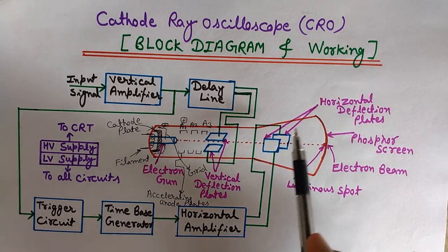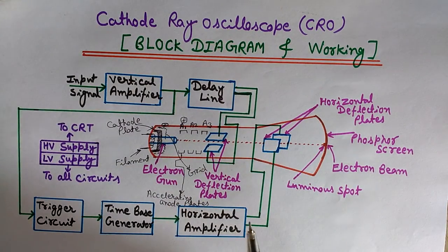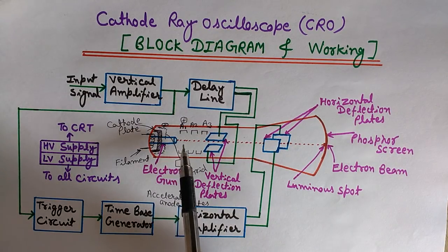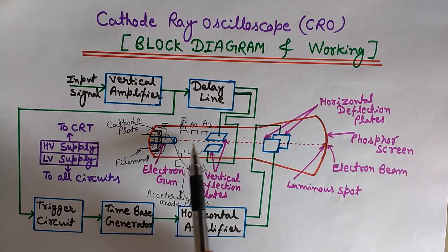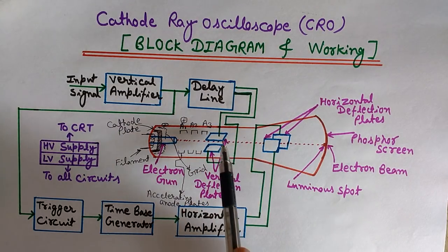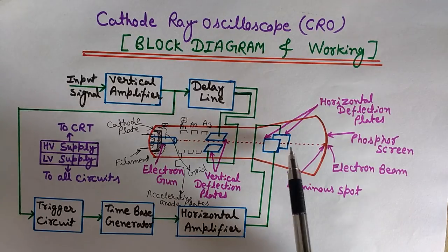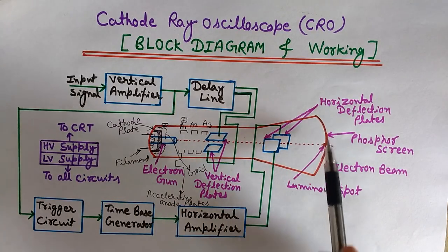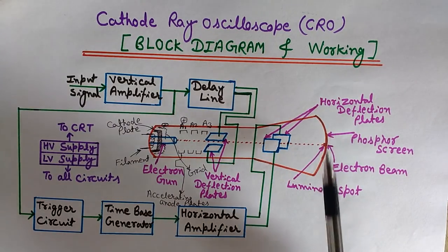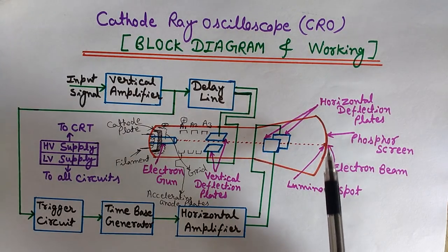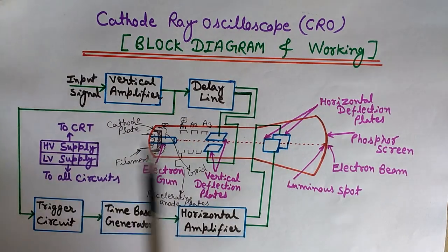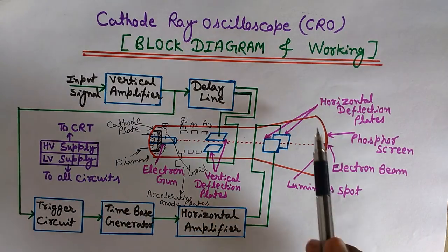Now let's discuss the functioning of the CRO, starting with the cathode ray tube. The CRT produces a high accelerating electron beam which passes through the horizontal and vertical deflection plate systems, reaches this screen, and produces a luminous spot. By this luminous spot we can analyze the waveform of the signal applied to the vertical amplifier.